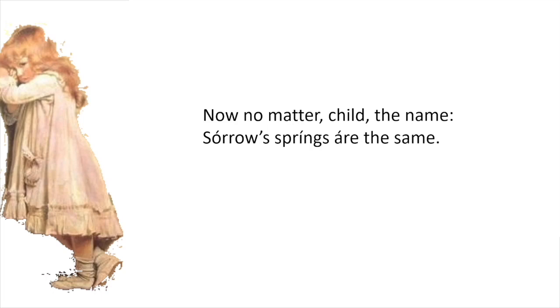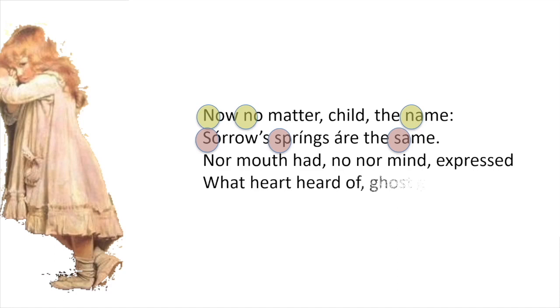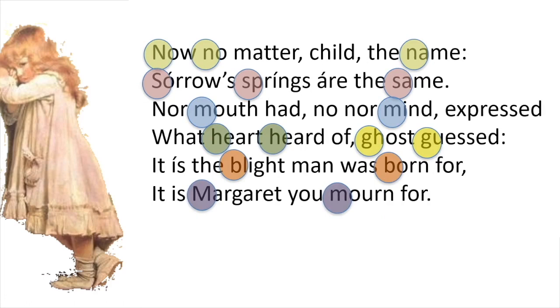She's crying for a darker reason — not just for the leaves — a reason which she, as a little child, is not fully conscious of. And so, to the ending of the poem. The poet makes extensive use of alliteration: the N sound in 'now, no, name,' and particularly the S sound in 'sorrows, springs, same.' That alliteration continues in the next couplet — 'mouth, mind; heart, heard; ghost, guessed' — and in the final couplet too: 'blight, born; Margaret, mourn.'